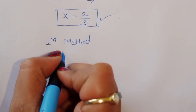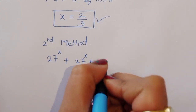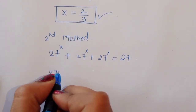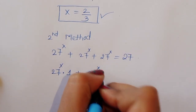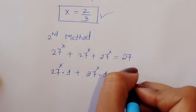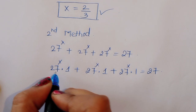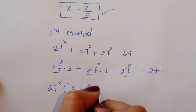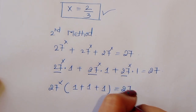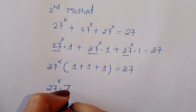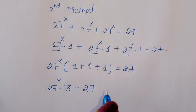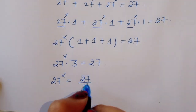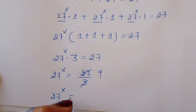Second method: 27 power x plus 27 power x plus 27 power x is equal to 27. Taking 27 power x common, we get 27 power x times 1 plus 1 plus 1 is equal to 27, so 27 power x times 3 is equal to 27. Therefore 27 power x is equal to 27 divided by 3, which gives 27 power x is equal to 9.